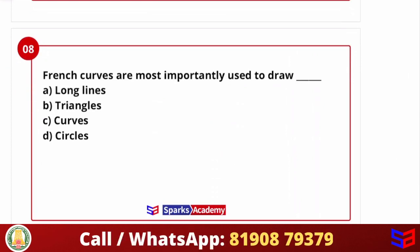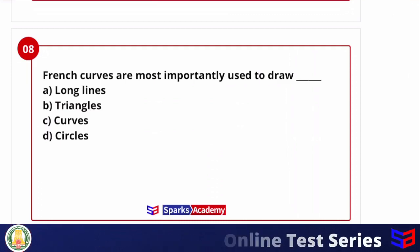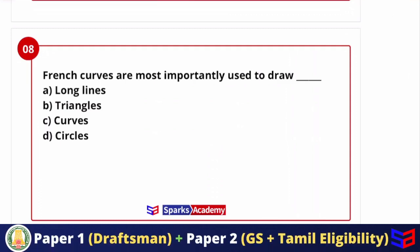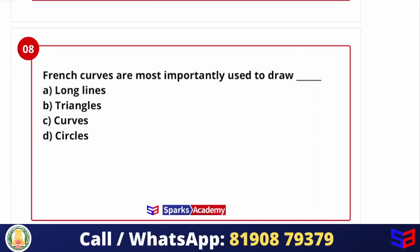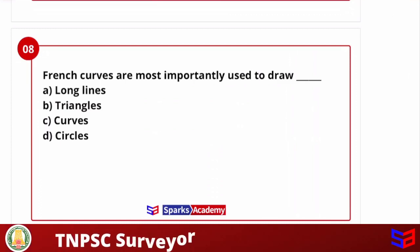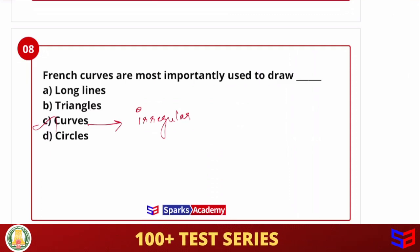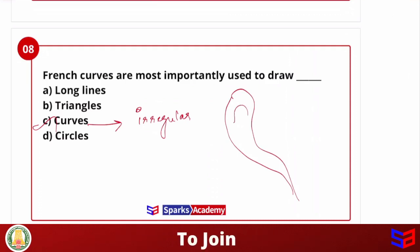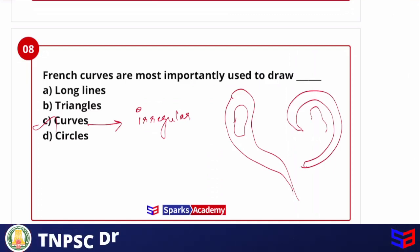Next question: French curves are most importantly used to draw — long lines, triangles, curves and circles? French curves are used to draw irregular curves of varying radius and curvature — irregular shapes. That is why we use the French curve to incorporate those shapes. So the answer is curves, specifically irregular curves.